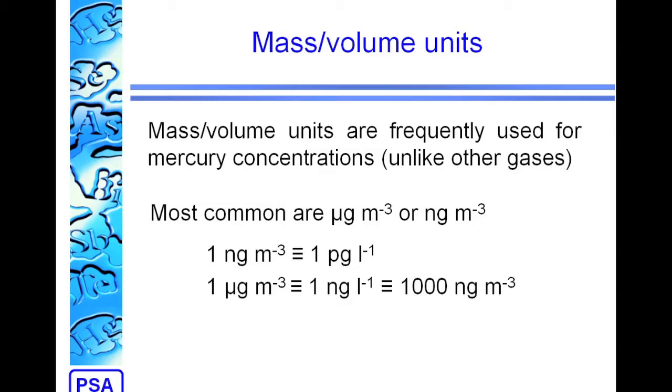The most commonly encountered units are micrograms per cubic meter or nanograms per cubic meter. The equivalence of these is shown on the screen. 1 nanogram per cubic meter is equivalent to 1 picogram per liter, and 1 microgram per cubic meter is equivalent to 1 nanogram per liter, which is equivalent to 1,000 nanograms per cubic meter.